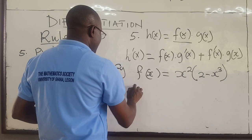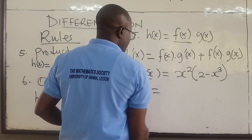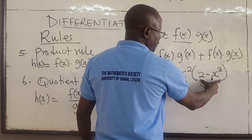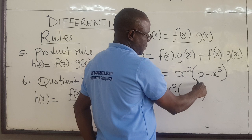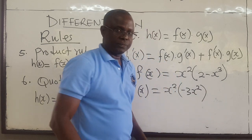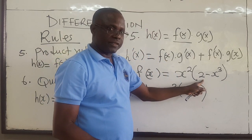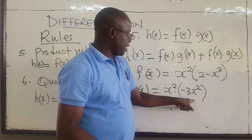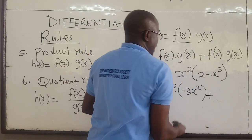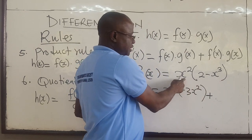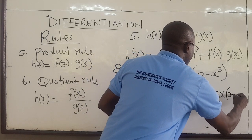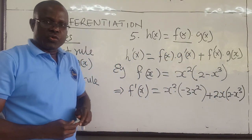So we just want to show how you apply the product rule. f'(x) would be equal to: leave x squared, then find the derivative of (2 minus x cubed). The derivative of the constant 2 is zero, and the derivative of negative x cubed gives negative 3x squared. Then plus leave (2 minus x cubed) and find the derivative of x squared, which is 2x. So that is the derivative.